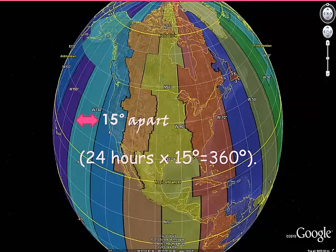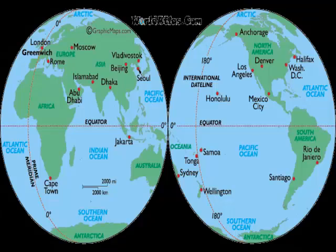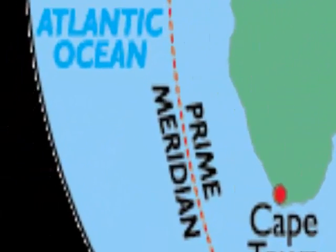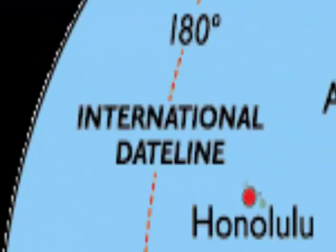Therefore, 24 hours multiplied by 15 degrees equals 360 degrees, which is one full rotation of the Earth. The two most popular vertical lines are the Prime Meridian and the International Date Line.